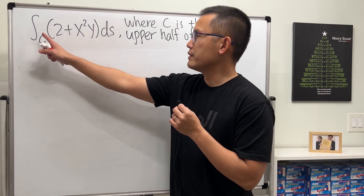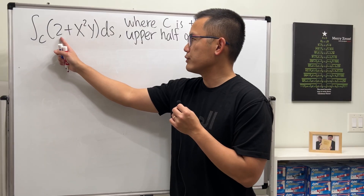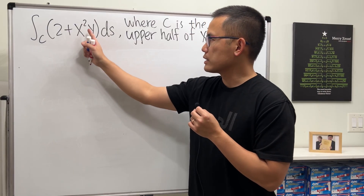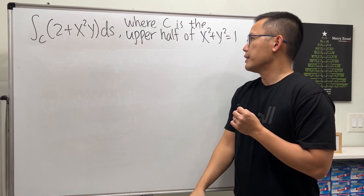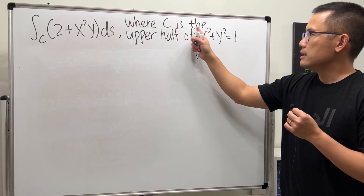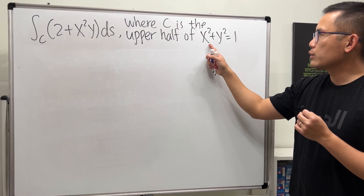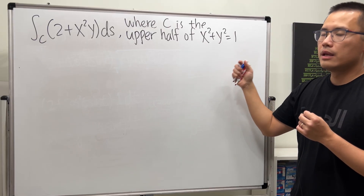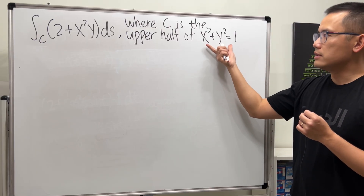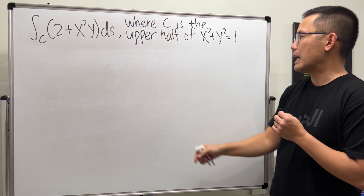For the first problem, we have the integral over C of 2 plus x squared y ds. Here, C is the upper half of x squared plus y squared equals 1. Notice this is just a unit circle, and we want the upper half of it.